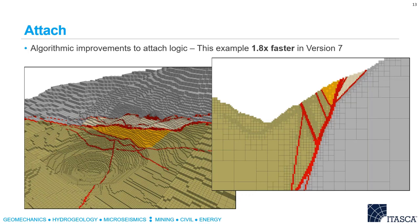Another aspect that's been sped up is the attach logic. For those not familiar with FLAC 3D, the attach logic is used to attach larger zones to smaller zones. You might want to do that if you have regions of interest with smaller zones and then bigger zones far away from the region of interest for a more efficient modeling situation. This example shows an open pit mine with small zones in the region of interest and larger zones away from it. The faults are shown in red as even smaller zones. This type of modeling is very common, and it is almost twice as fast in version 7 than version 6.